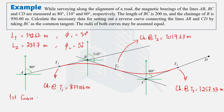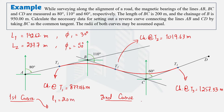In order to set out the reverse curve using the deflection angle method, we should first decide the peg intervals depending upon the length of both curves. For the first curve we will decide the peg interval, and similarly for the second curve. Depending upon the length of the curve we can decide the peg interval. The length of the first curve is small compared to the second curve, so we take the peg interval for the first curve as 20m and for the second curve as 30m.